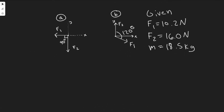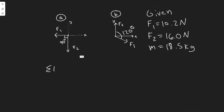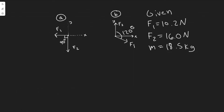The way you find the net force is you're going to sum up the forces in x and sum up the forces in y. The net force Fn is equal to the square root of the sum of the forces in x squared plus the sum of the forces in y squared. That's the formula we're going to use to find the net force.